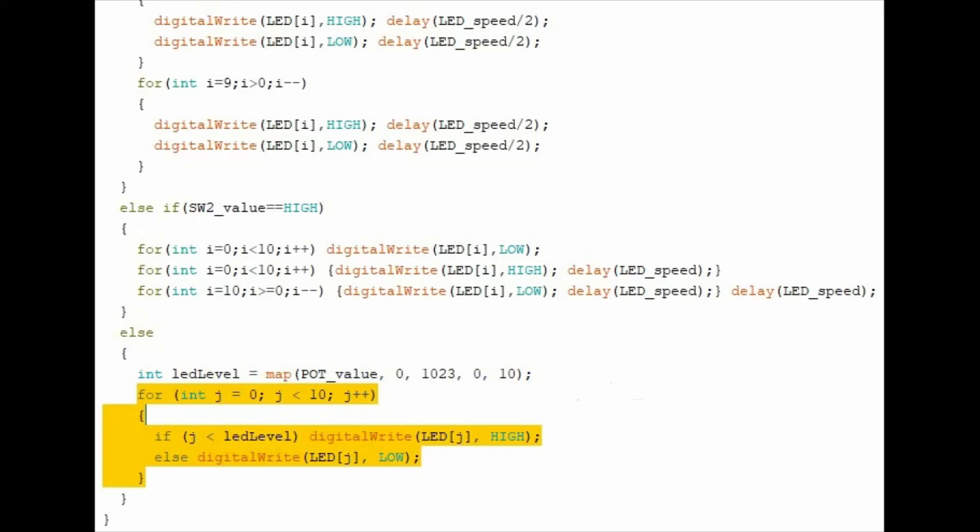Finally, this for loop is used to turn on or off the LEDs when the potentiometer is varied.